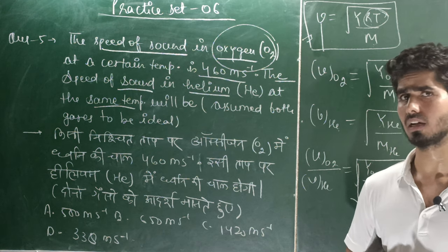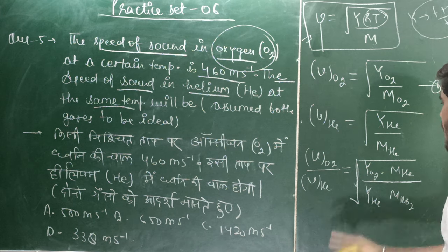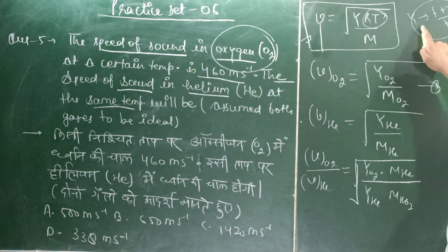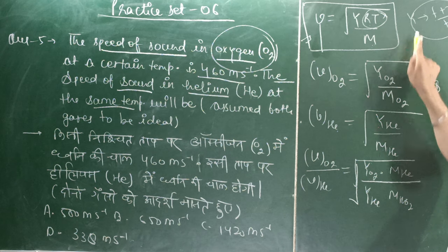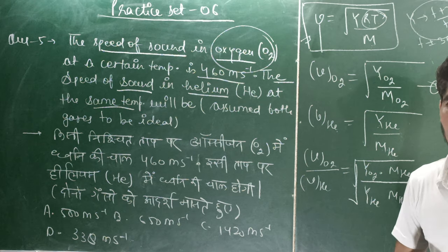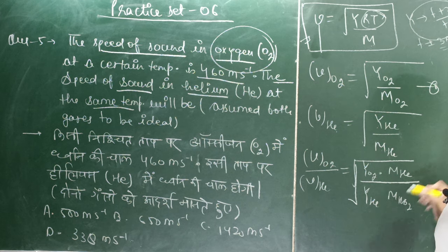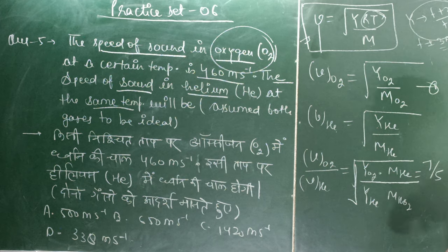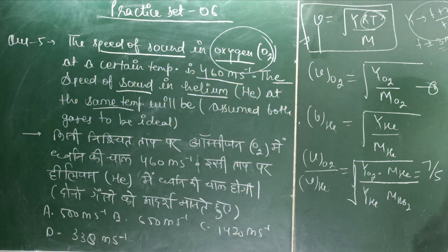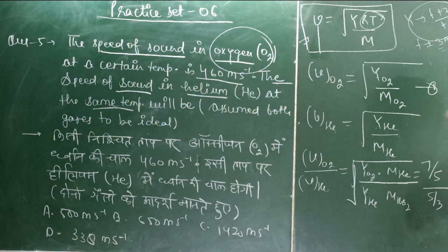The gamma formula uses degree of freedom F = (f+2)/f. For diatomic O2, F = 5, giving γ = 7/5. For monatomic He, F = 3, giving γ = 5/3. Now substituting: the ratio becomes √(7/5 · 4 / 5/3 · 32), which simplifies using these molecular mass and gamma values.